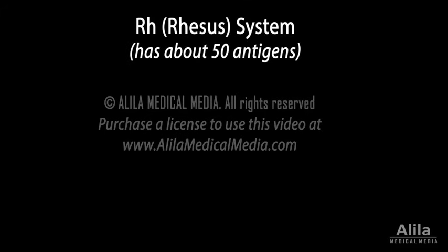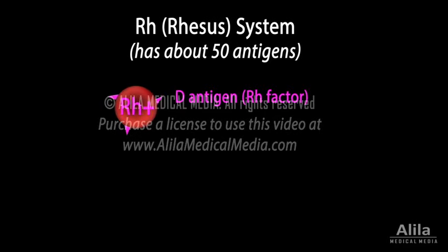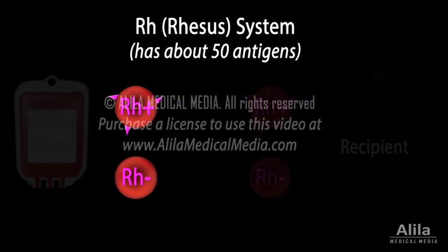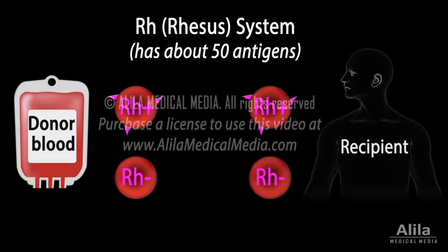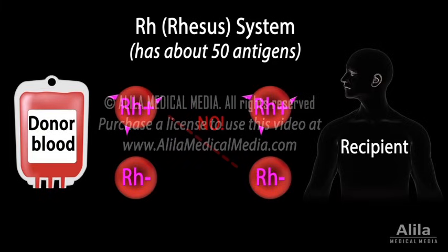Another important system is the Rh system, for which D antigen, or Rh factor, is best known. The blood type for this antigen can be either Rh positive or Rh negative. By the same rule, a Rh negative patient cannot receive blood from a Rh positive donor, while the reverse direction is fine.